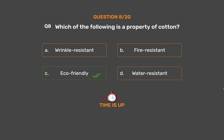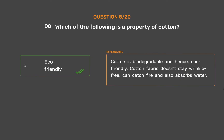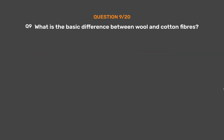The correct answer is Option C, Eco-friendly. Cotton is biodegradable and hence eco-friendly. Cotton fabric doesn't stay wrinkle-free, can catch fire, and also absorbs water.